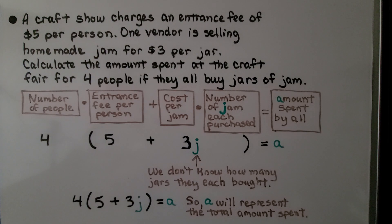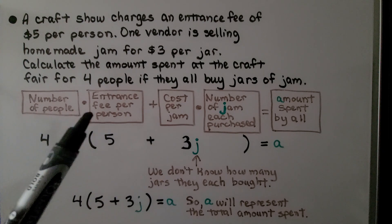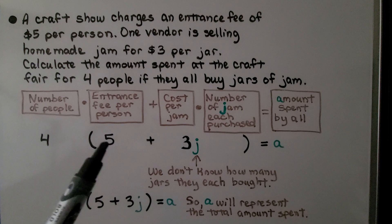A craft show charges an entrance fee of $5 per person. One vendor is selling homemade jam for $3 per jar. Calculate the amount spent at the craft fair for four people if they all buy jars of jam. So we have the number of people, that's four. We're going to multiply that by the entrance fee per person, that's $5...